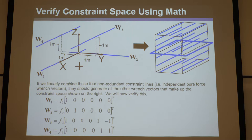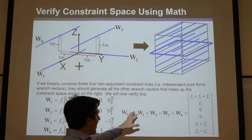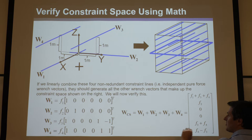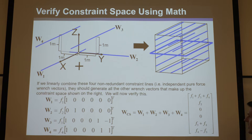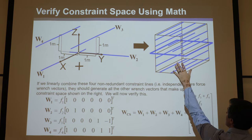Now we want to linearly combine them — add them all together and allow F1, F2, and F3 as scalar values to be any real finite number. This will generate a wrench constraint space vector, which is just a six-by-one vector. It has four independent magnitudes that can be any real finite number, represented in a single six-by-one vector. This is the wrench constraint space.